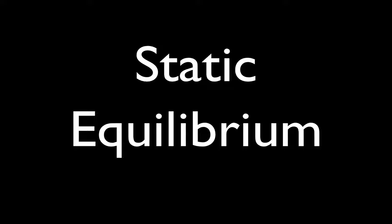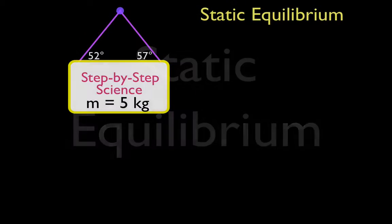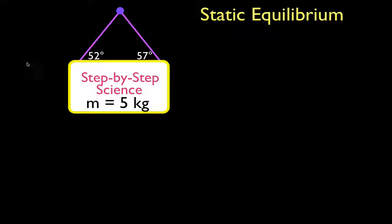In today's video, I'm going to go over a problem involving static equilibrium, and this is the situation we have. We have here the Step-by-Step Science sign, which has a mass of 5 kilograms. It's hanging from the wall and supported by these two wires, hung over this point right here. This wire makes an angle of 52 degrees and this wire makes an angle of 57 degrees with the top of the sign. We would like to know what is the tension in wire number one and what is the tension in wire number two.